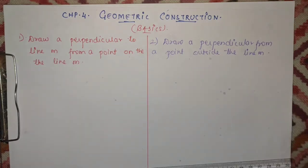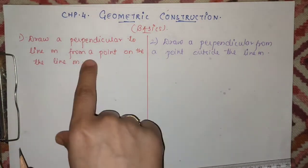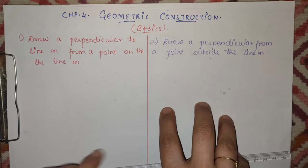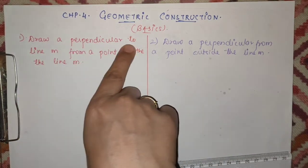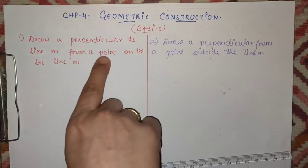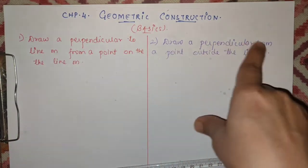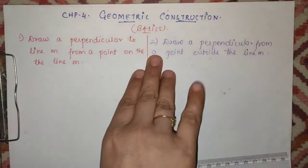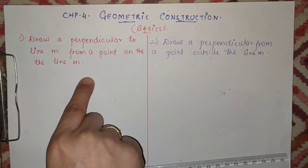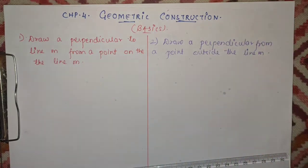Now let us start with the first question. Students, if we see two questions, there is only one difference. Draw a perpendicular to line M from a point on the line — and here — draw a perpendicular to line M from a point outside the line. So one is on the line and the other is outside the line. Let us see how we will draw in both cases.